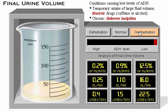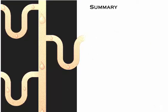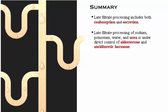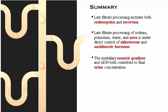Here's a summary of what we've covered. Late filtrate processing includes both reabsorption and secretion. Late filtrate processing of sodium, potassium, water, and urea is under direct control of aldosterone and antidiuretic hormone. The medullary osmotic gradient and ADH both contribute to final urine concentration. In normal conditions, about 99% of the glomerular filtrate is reabsorbed during its passage through the tubules and ducts.